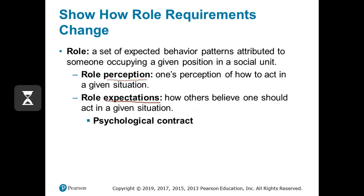What happens when there's a conflict between one's role perception and others' role expectations is that we tend to have a violation of the psychological contract. The psychological contract is based upon our role expectations for others. In this case, my psychological contract with the student was that I would expect them to invest in their education as laid out by the expectations of the course. Because their role perception was not consistent with that, there was a disconnect and the psychological contract was not upheld.